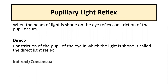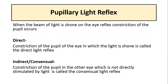The second component is the indirect or consensual light reflex, where constriction of the pupil occurs in the other eye which is not directly stimulated by the light. That is, the light is shone in the left eye and constriction of the pupil occurs in the right eye. That is called the indirect or consensual light reflex.